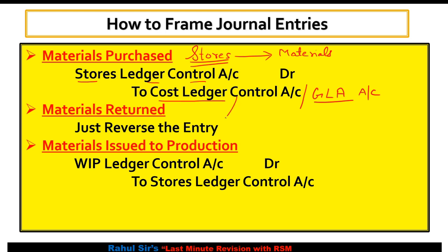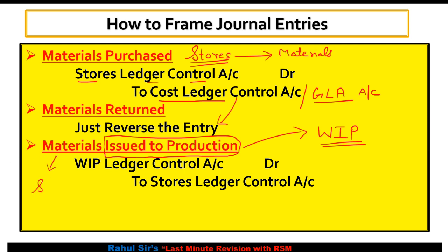Materials issued to production: wherever the words 'issued to production' appear, remember WIP — Work in Progress. So materials issued to production entry will be: WIP Ledger Control Account debit, to Stores Ledger Control Account. This is quite simple. Unless you are comfortable with the journal entries, you cannot solve practical questions, so we focus more on understanding these entries.